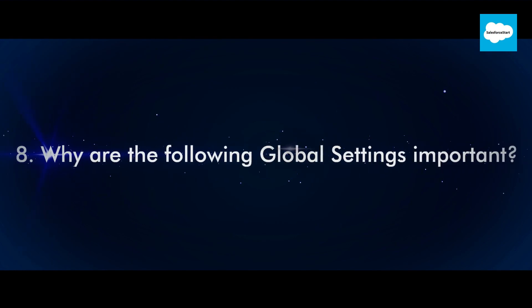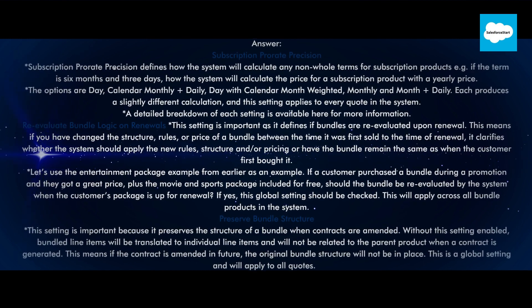Question 8: Why are the following global settings important? Subscription prorate precision: this defines how the system will calculate any non-whole terms for subscription products — for example, if the term is six months and three days, how the system will calculate the price for a subscription product with a yearly price. The options are day, calendar monthly plus daily, day with calendar month weighted, monthly, and month plus daily. Each produces a slightly different calculation, and this setting applies to every quote in the system.